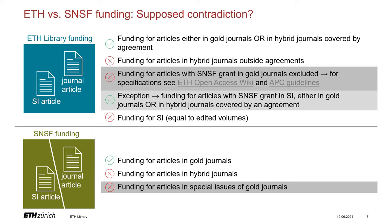There is reason for hope, since the ETH Library does not distinguish between articles in scientific journals and articles in special issues. Although SNSF-funded articles in gold journals or related special issues are principally excluded from funding according to the ETH Library's APC guidelines, an exception is made for articles in special issues of gold journals, and funding is ensured by the ETH Library. Please bear in mind that articles in special issues can be funded by the ETH Library regardless of any provisions to the contrary, provided that the internal funding criteria are met. You can find the funding criteria in the open access wiki linked on this slide.